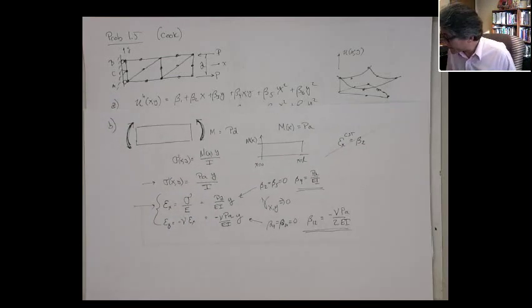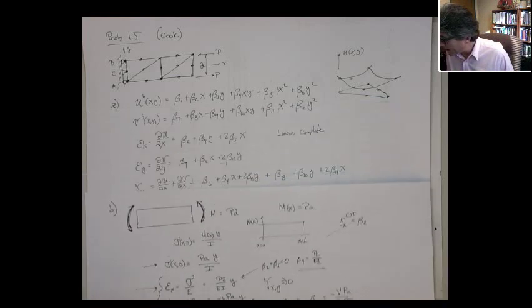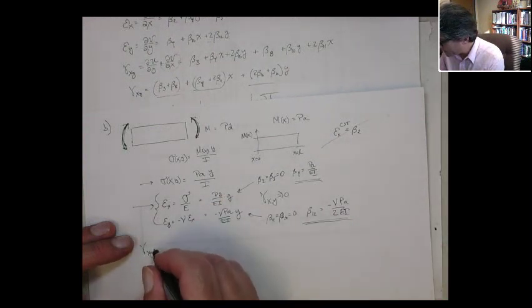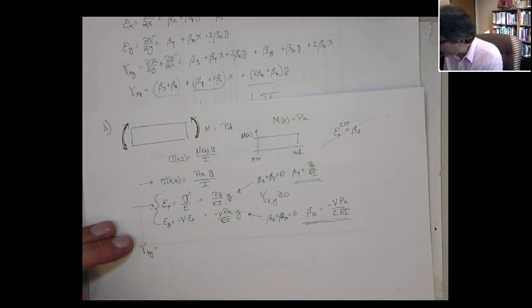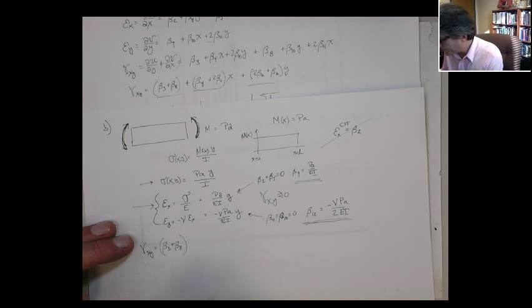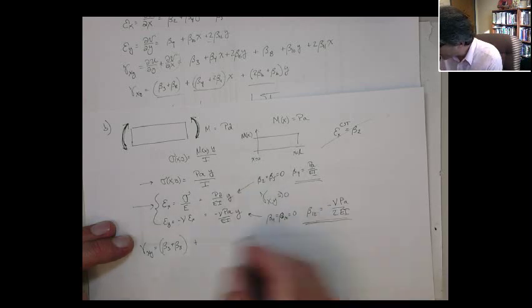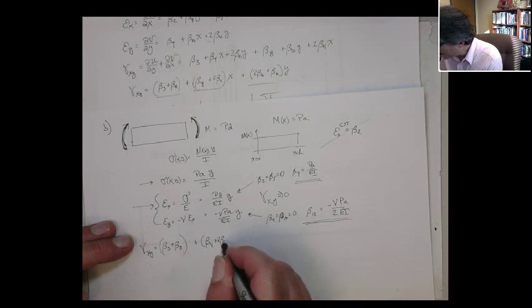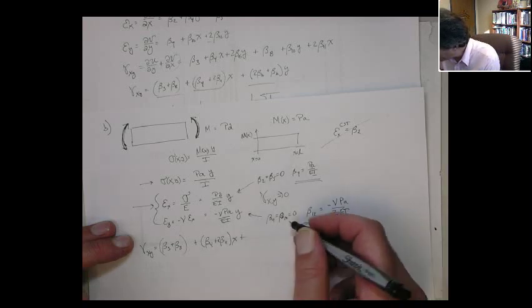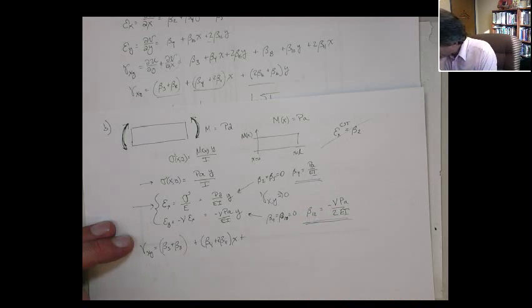I would recover this if beta 9 equals zero, and beta 10 is also zero, and then beta 12 is minus nu PA on, because I have the 2 beta 12 here, EI. So if I construct it, if I pick the nodal displacements such that these come out to be the betas, this element should be able to exactly reproduce that linear strain field.